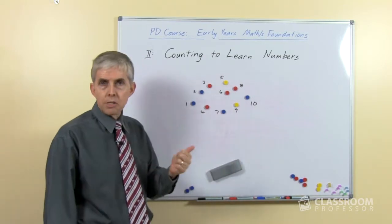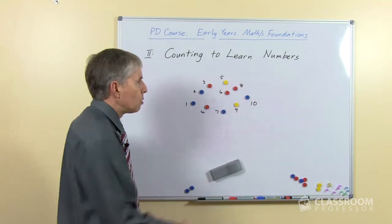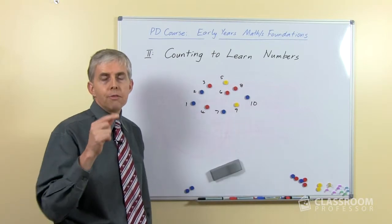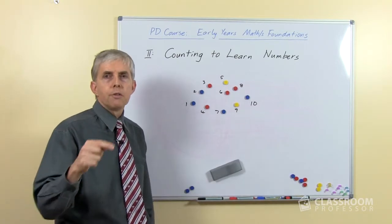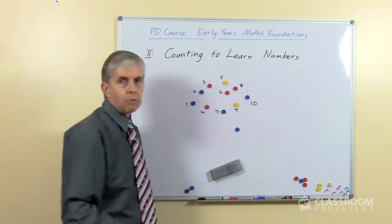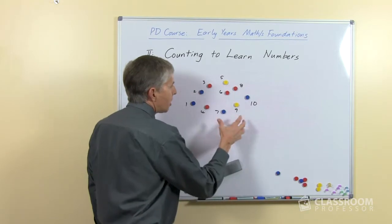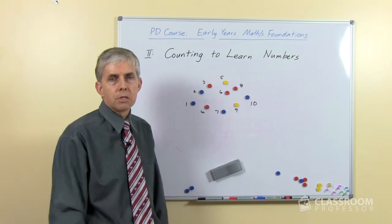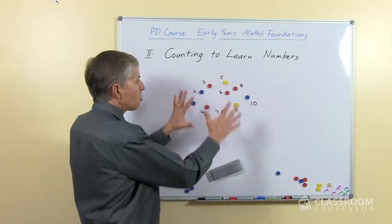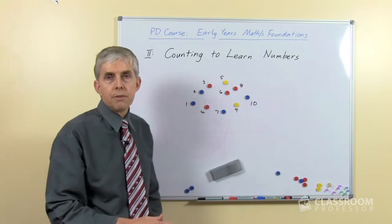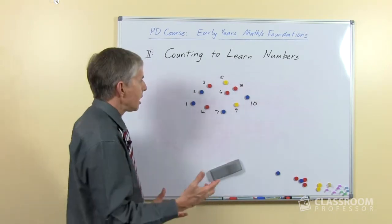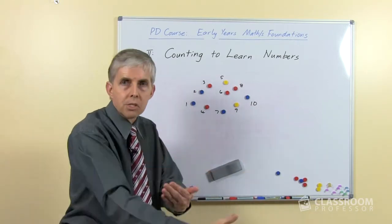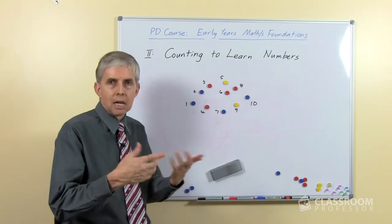So that's the first thing: you have to know the sequence. Then you have to apply the sequence correctly to the objects — you have to have one number for each object and one object for every number. We don't have an object without a number and we don't have a number without an object. This is what we call 1-to-1 correspondence: an exact correspondence between the number of objects in the set — the numerosity of the set — and the sequence of number names from 1 to 10.